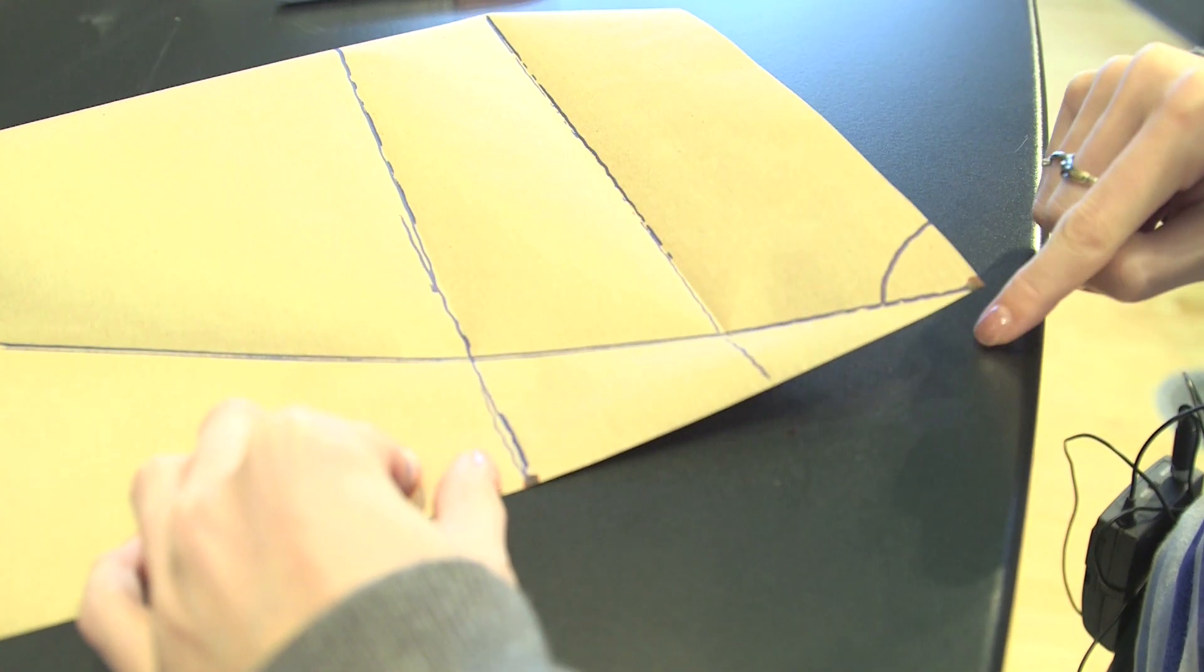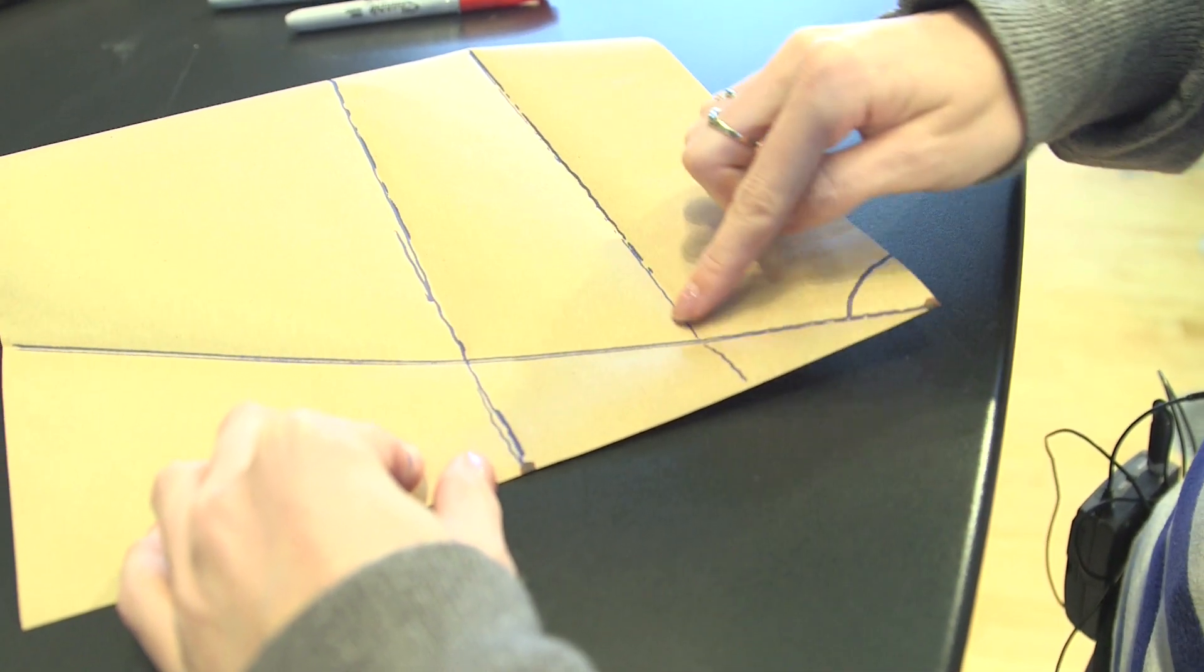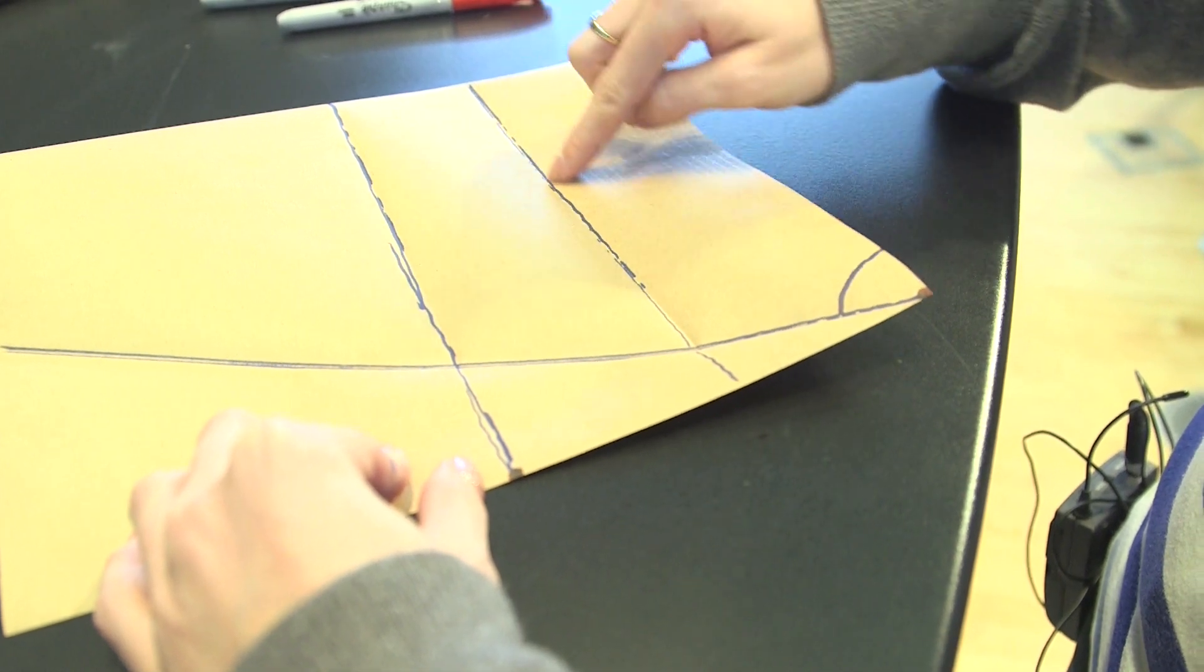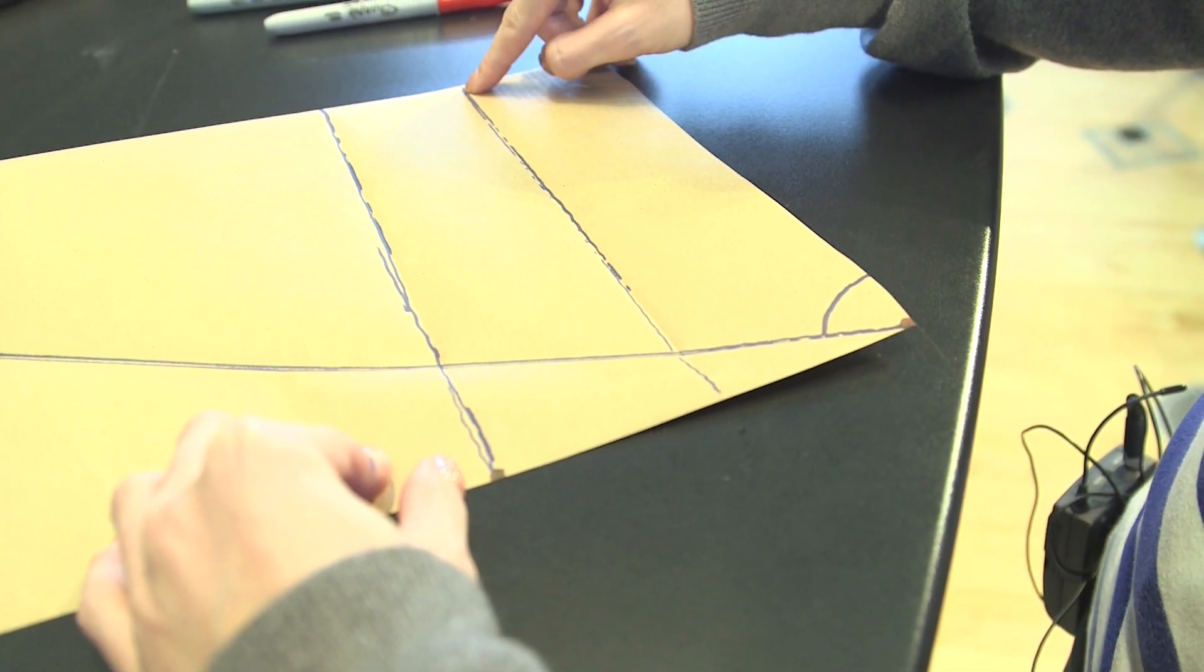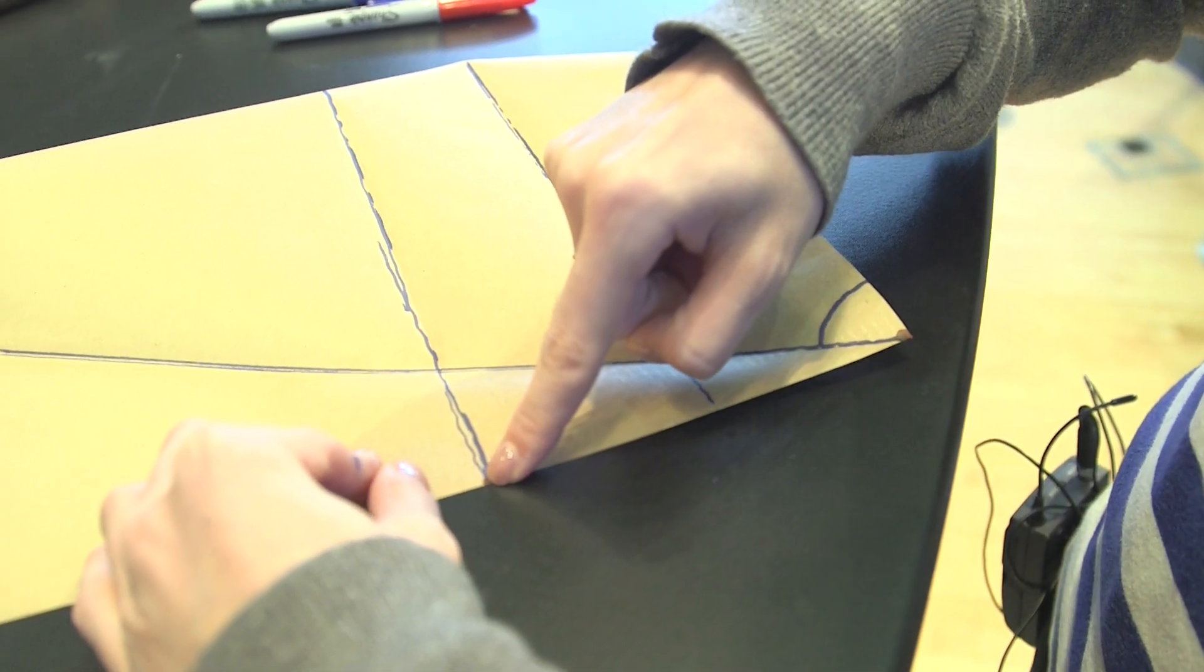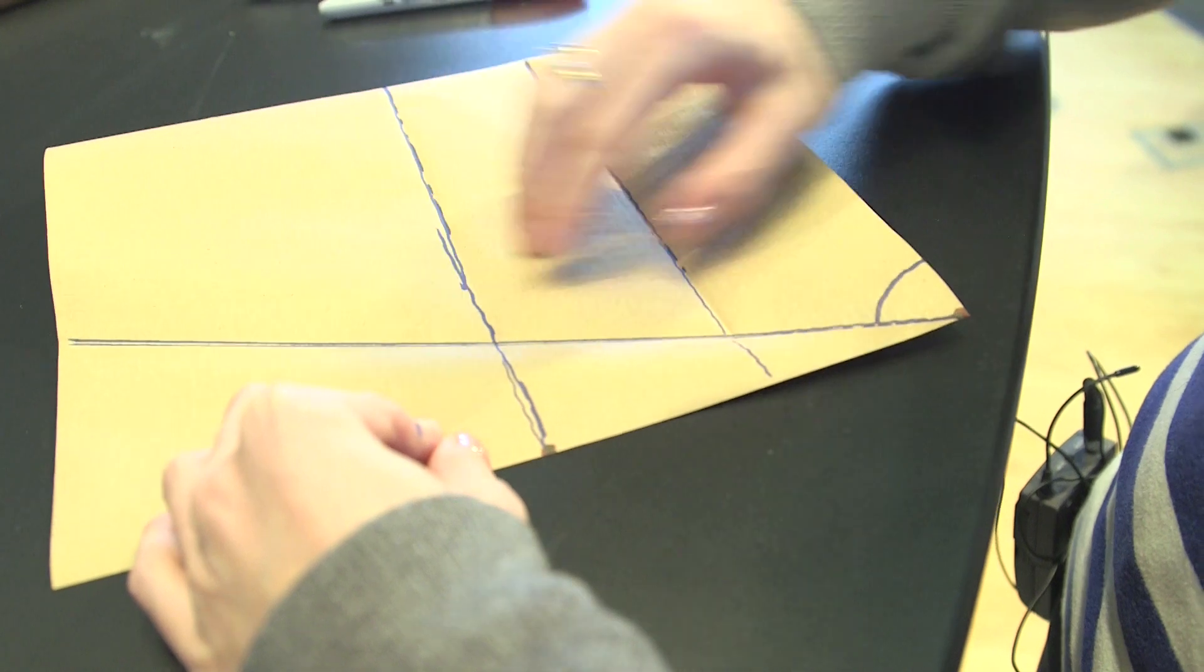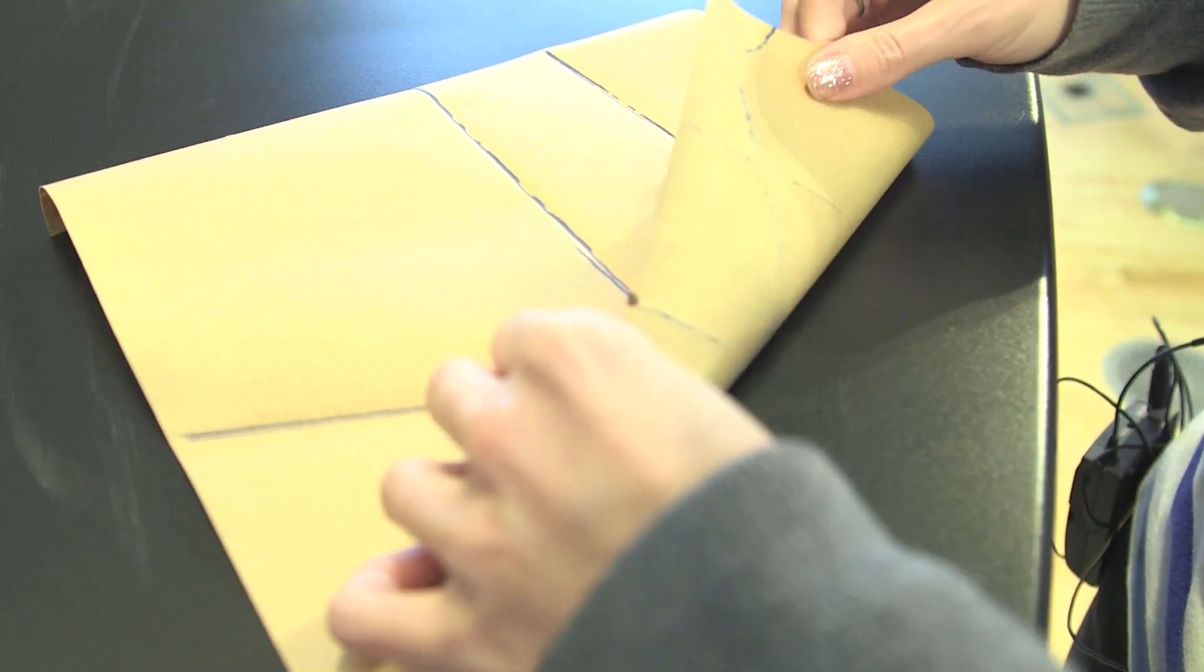I will fold the paper so that this point at the tip of the angle lines up, matches this line, this crease that I created before. And this point halfway up the paper matches this line, which is the angle itself.